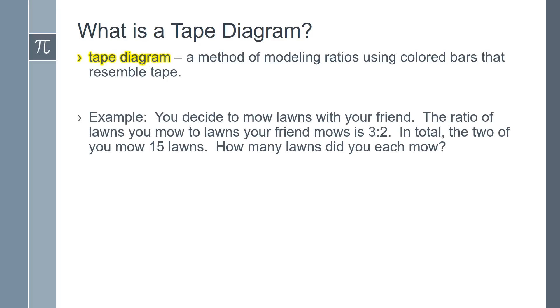For example, you decide to mow lawns with your friend. The ratio of lawns you mow to lawns your friend mows is 3 to 2. In total, the two of you mow 15 lawns. How many lawns did you each mow?